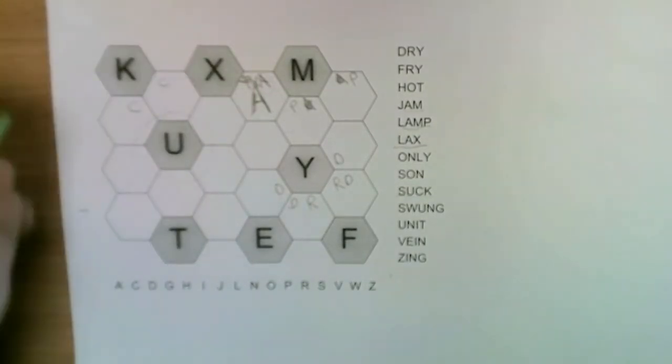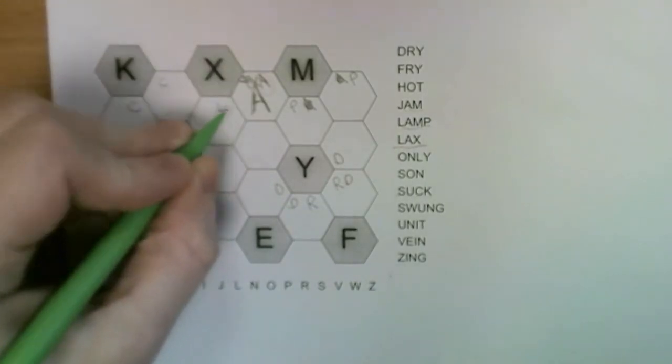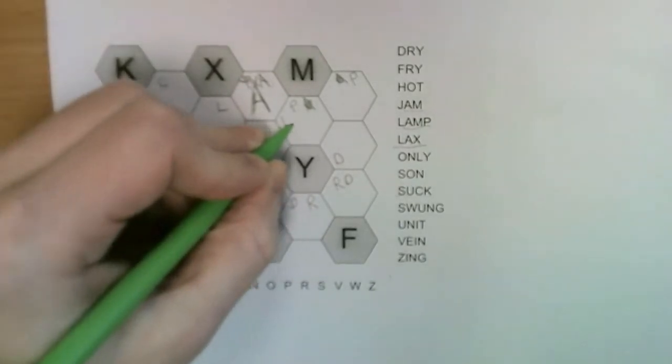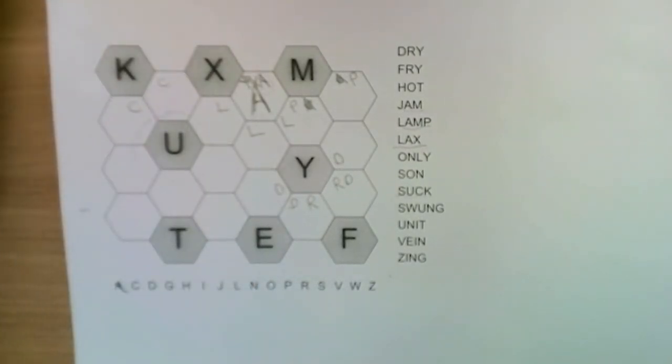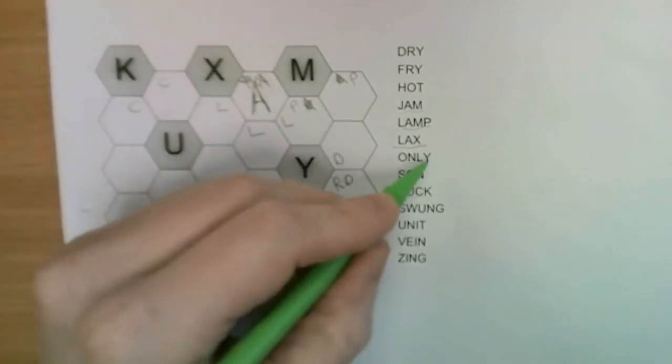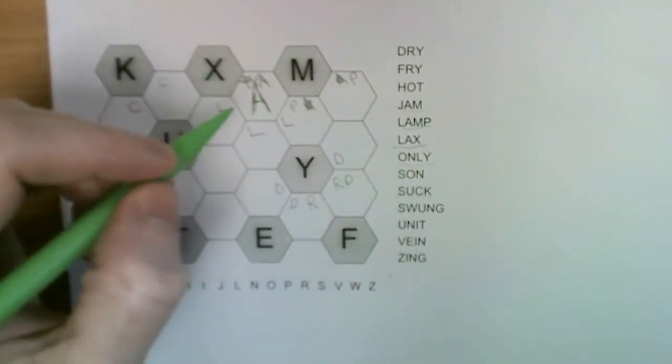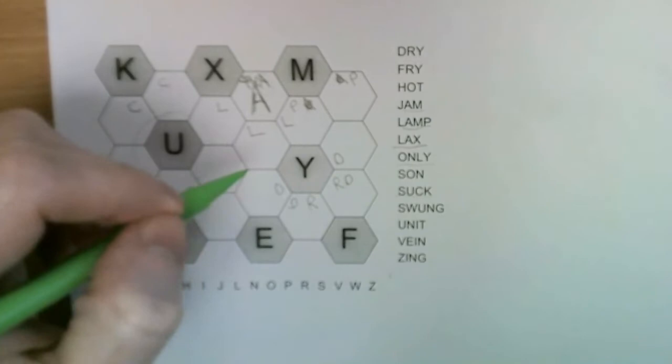It's always handy to cross off the letter underneath the grid to keep track of what we've already placed. So now we know that the L neighbors the A.